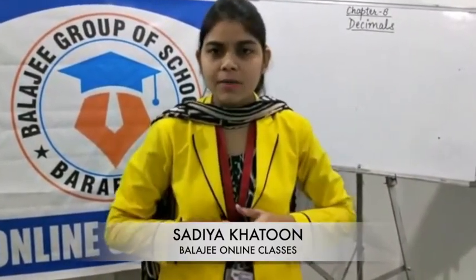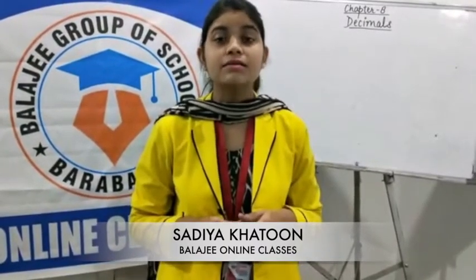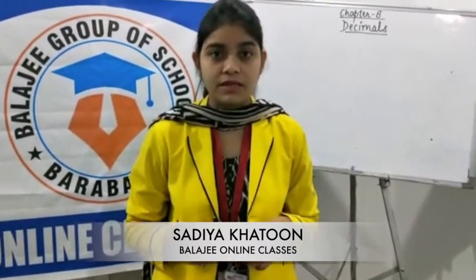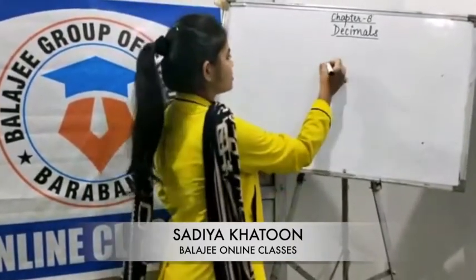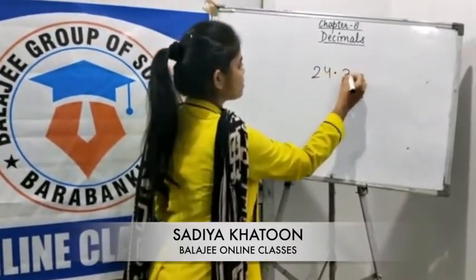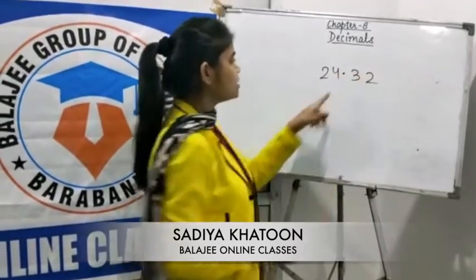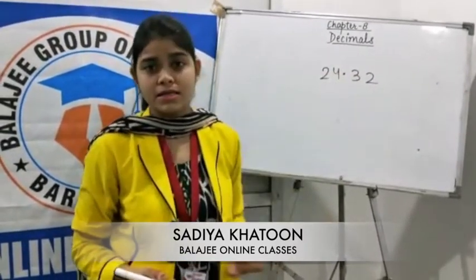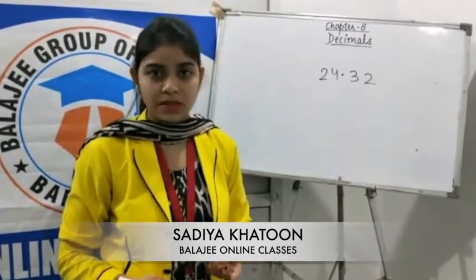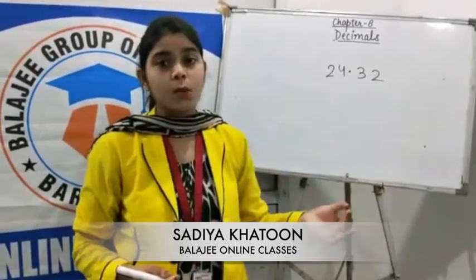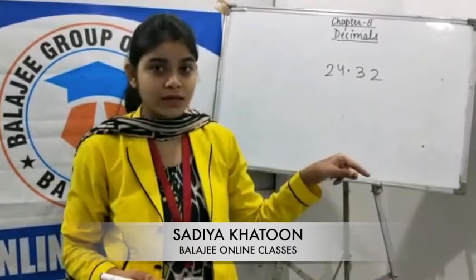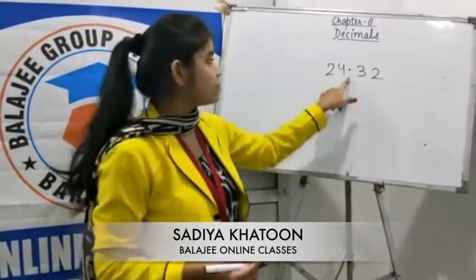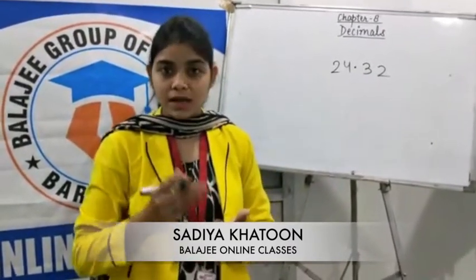Children, you have already studied about decimals in your previous class, that is in Class 5, where decimals were introduced in your syllabus. When we say something like 24.32, this point in Mathematics represents the decimal. We read it as 24 point 32. In decimals we will be learning about these same digits.